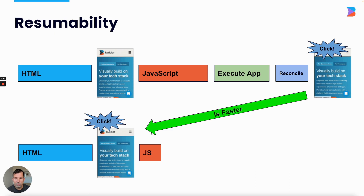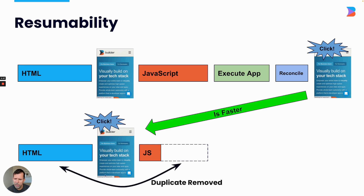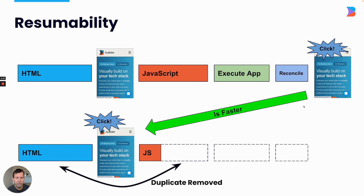Now, I know what you're thinking — clearly I've cheated, I made the JavaScript smaller. What is this missing part? Well, this missing part is actually removed because we removed the duplication. Remember how HTML is in many ways a duplicate of the JavaScript? What resumability allows you to do is essentially remove this duplication, and as a result the amount of JavaScript you're sending is much, much smaller. What about the execution of the app and the reconciliation? Those particular parts are removed because of resumability. It turns out that even if you wanted to execute the application and do full reconciliation, you couldn't, because a huge part of the JavaScript is actually missing — it was removed because it was deemed unnecessary since it was already present in the HTML. This is the reason why resumability is faster on startup performance.